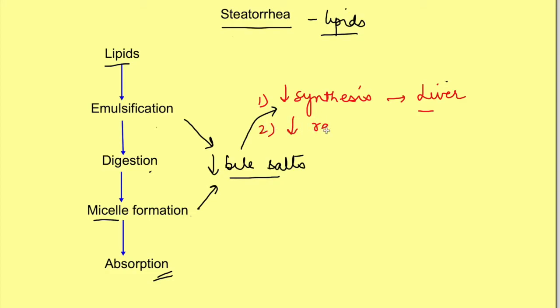Then there can be decrease in release of the bile salts via the bile ducts. If there is a problem in the bile ducts like primary biliary cirrhosis, cholestatic diseases will cause steatorrhea.